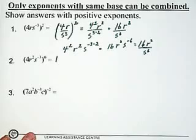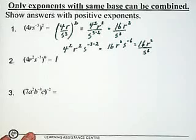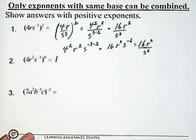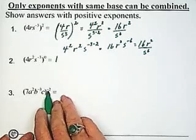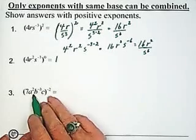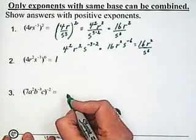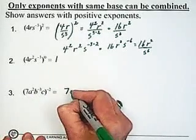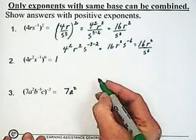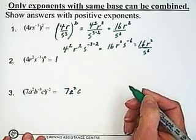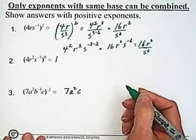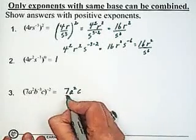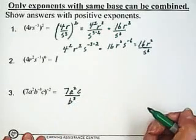Next question: 7a squared, b to the minus 3, c, all raised to the power of minus 2. There's more than one way you could handle it. You could deal with the b to the minus 3 first — there's absolutely nothing wrong with doing that — and we'll just leave that minus 2 alone for now. So 7 stays the way it is, a squared doesn't change, and c doesn't change because its exponent is positive 1. Our b to the minus 3 is going to go into the denominator and the exponent will become a positive 3.